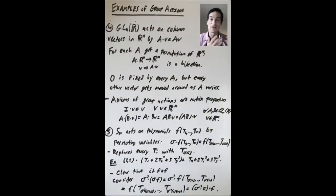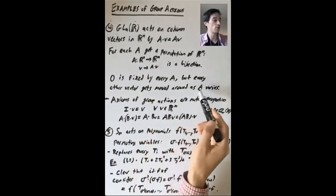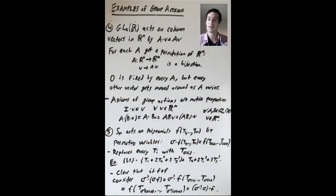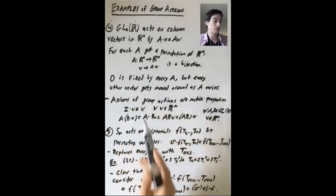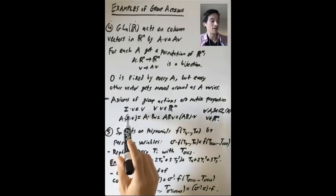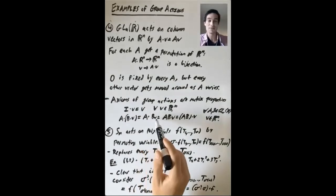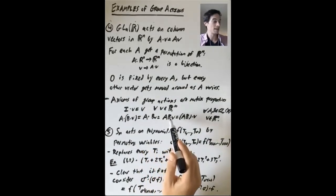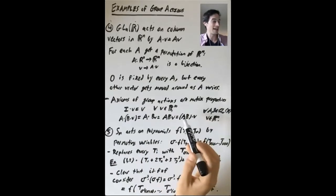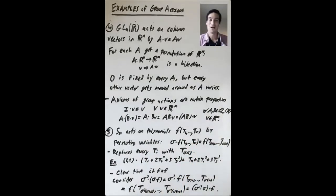So let's think about how vectors move around. Zero is fixed by every element. So A times zero is always equal to the zero vector. But every other vector gets moved around as A varies. So you fix one vector v and ask, how does it move as you vary this matrix A? So the axioms that make this into a group action are properties of matrices that you know. So if you take the identity matrix and you multiply by any column vector v, you just get back v. And if you take A acting on B acting on v, that's A acting on B times v, which is the matrix A times B acting on v.